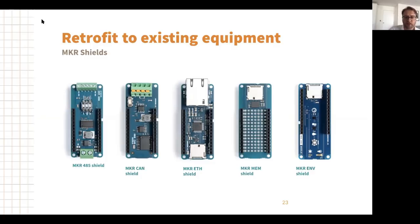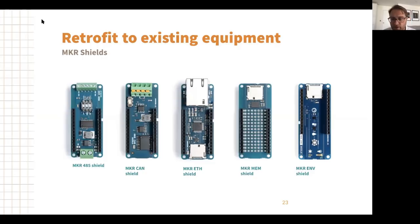We also have the MKR 485 Shield, which is useful if you want to connect to Modbus, DMX lighting, and similar systems. We have the MKR CAN shield for automotive type systems, the Ethernet shield, and finally the MKR MEM shield, which has a pretty big prototyping area so you can create your own peripherals on top of it.